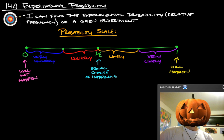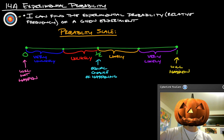Over here at 0, this means it will not happen. It's absolutely not going to happen. On the other end of the probability scale, you have 1, which means it will happen, absolutely.